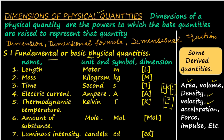Any physical quantity can be represented by a combination of these dimensions of the physical world. All 7 dimensions are not necessarily represented in the equation — only dimensions of those physical quantities present in the equation are represented. Along with that, mass and time are represented whether or not these quantities are present in the equation.